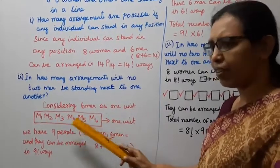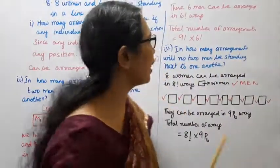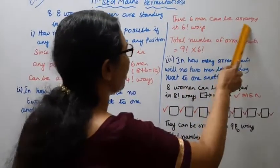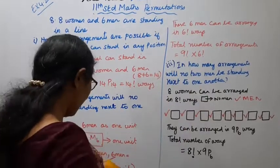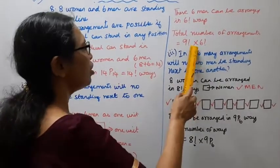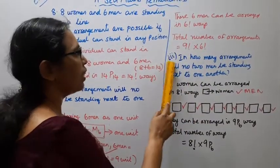That way, the 6 men can be arranged in 6 factorial ways. Total number of arrangements: 9 factorial into 6 factorial.